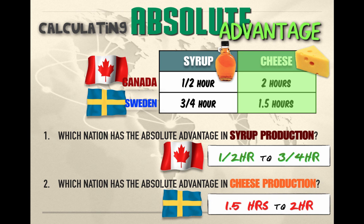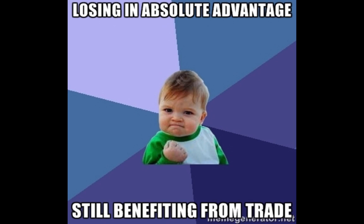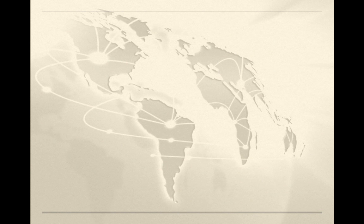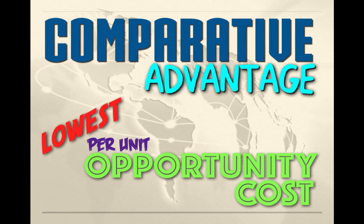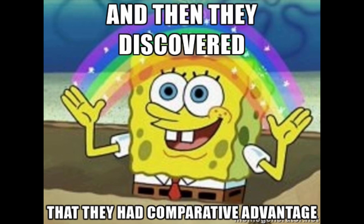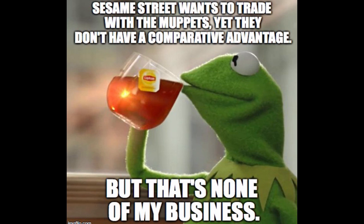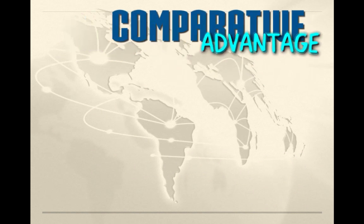It's important to note that absolute advantage does not tell us whether or not two countries should engage in trade. It simply tells us which country produces more or produces the same amount using fewer resources. If we want to find out whether two countries should trade, we look at comparative advantage. Comparative advantage is a situation where a country can produce goods and services at a lower per-unit opportunity cost than another nation, meaning that country gives up less to produce a good and is therefore more productively efficient at producing it. If two countries with comparative advantages in different goods can find each other and agree to trade, each trading nation can import goods cheaper than they could produce them domestically.